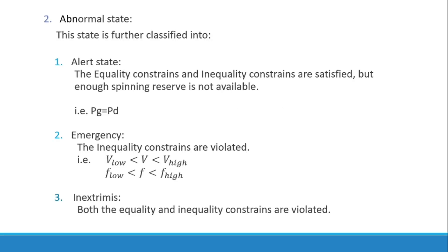The next state is the abnormal state, which is further classified into alert, emergency, and in-extremis states. In the alert state, both equality and inequality constraints are satisfied; however, there is a reduction in the generation margin — there is not enough spinning reserve available. That is, the power generation equals the power demand, whereas in the normal state, power generation is greater than power demand.